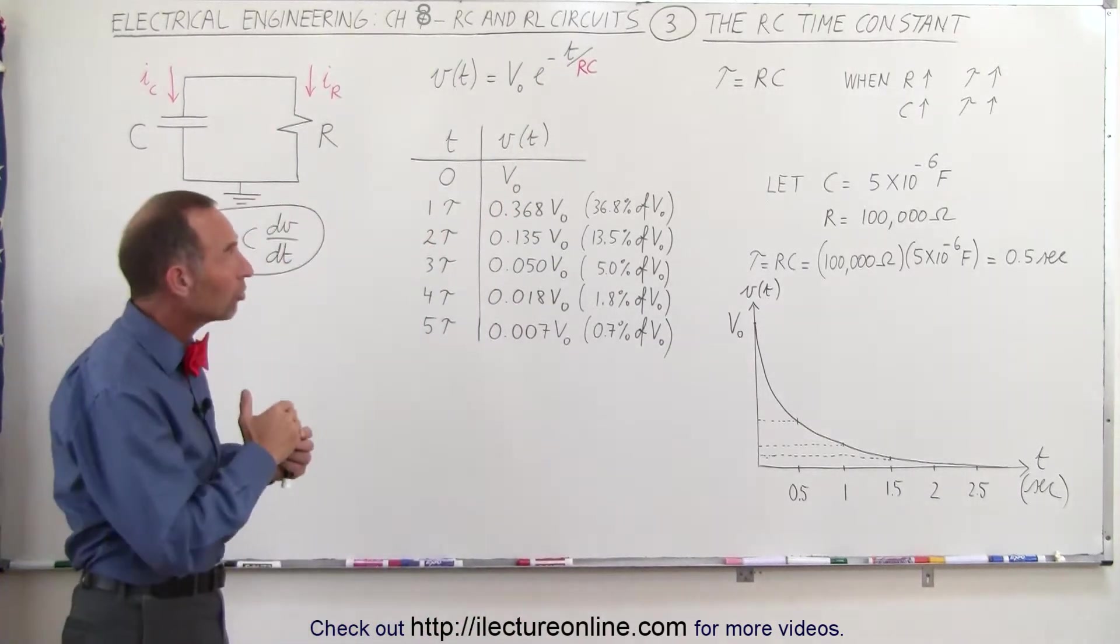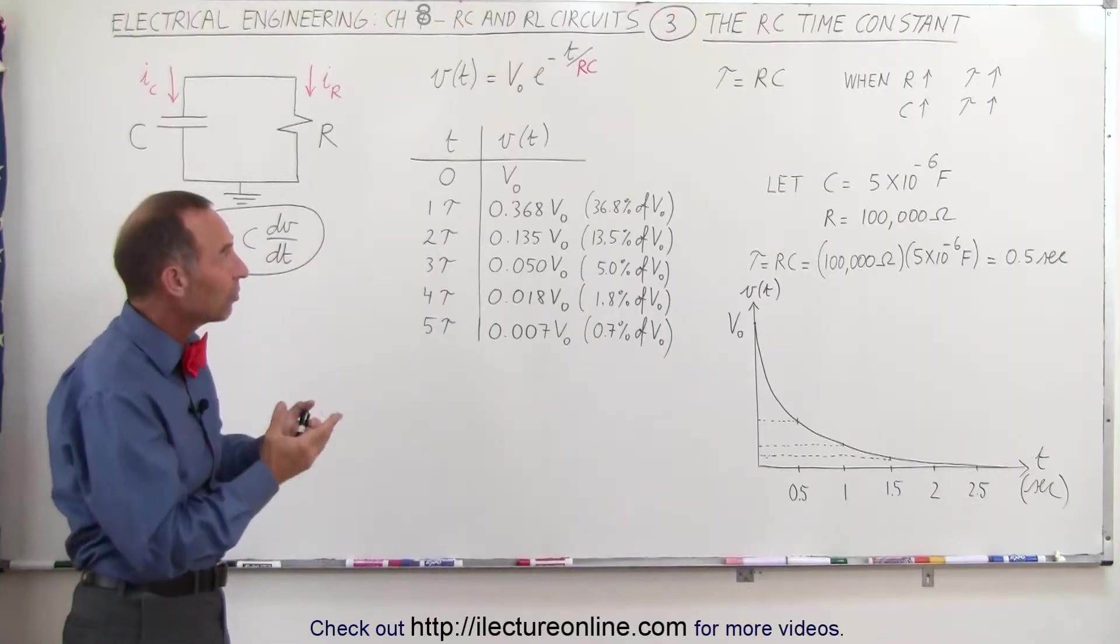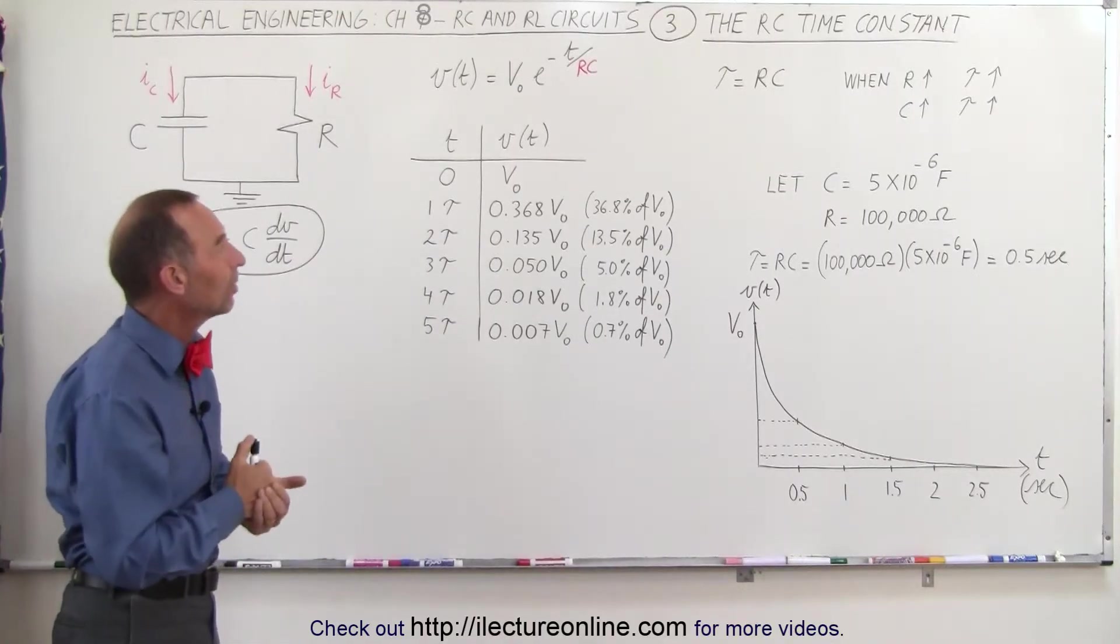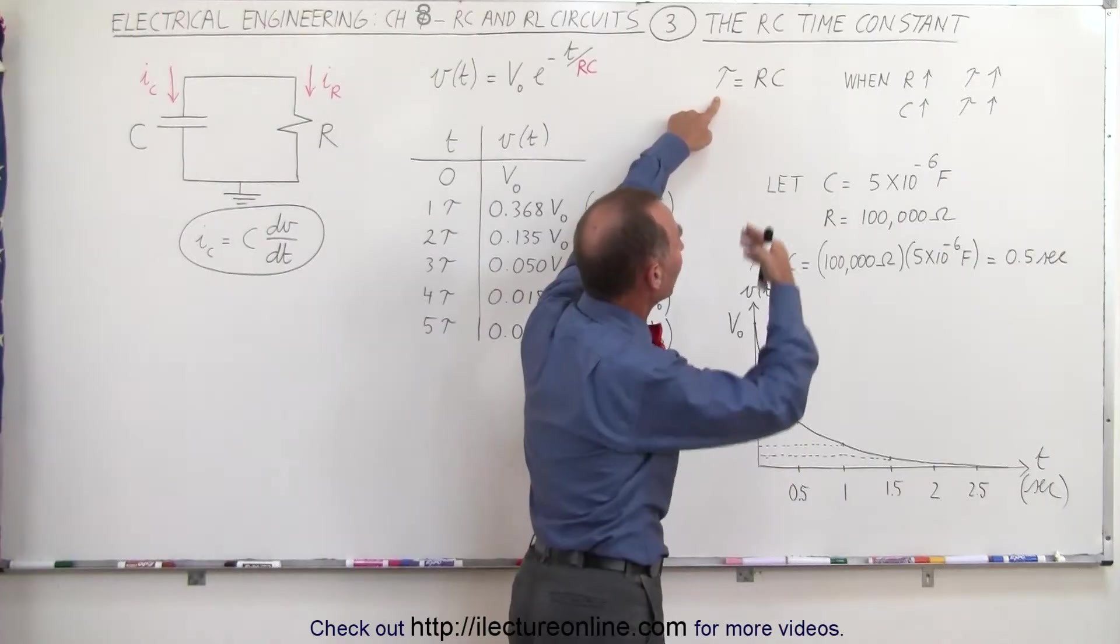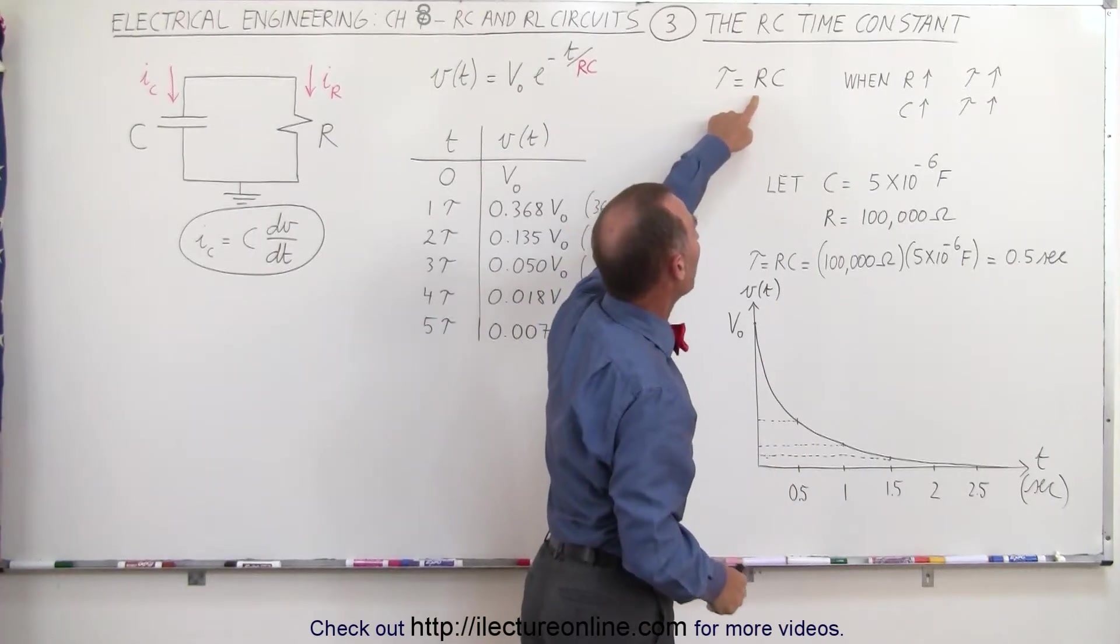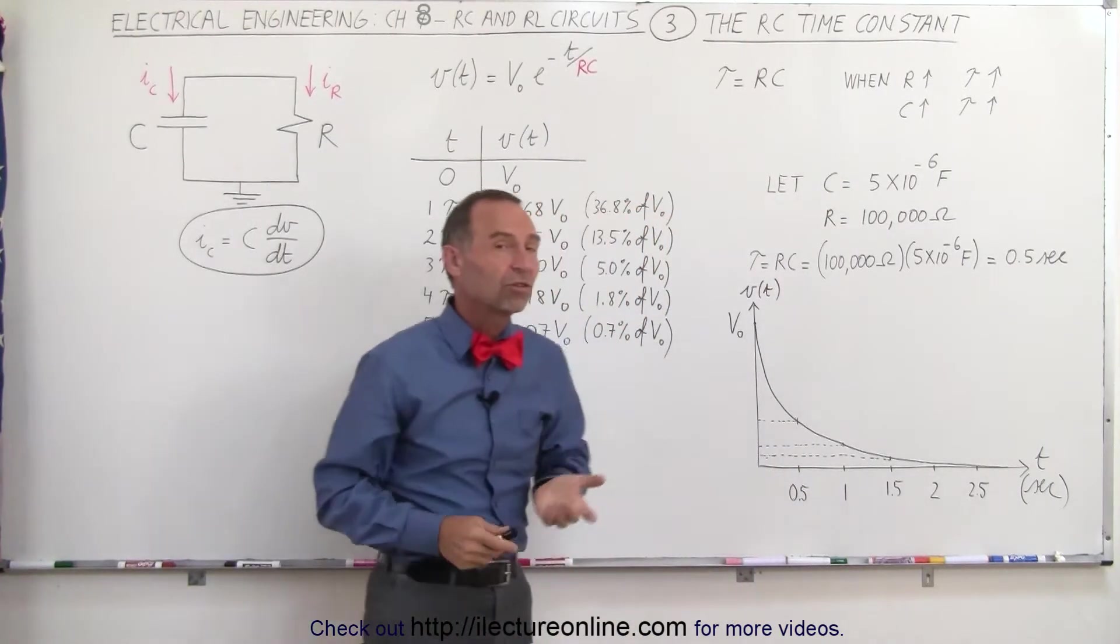Now that product, RC, the resistance times the capacitance, is known as the time constant. So we call it tau, the Greek letter tau, which represents the time constant, is the product of R times C in an RC circuit.